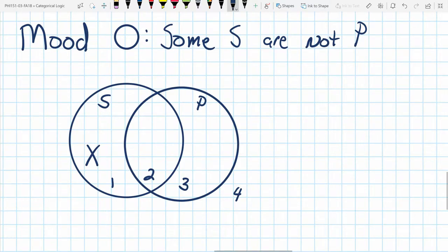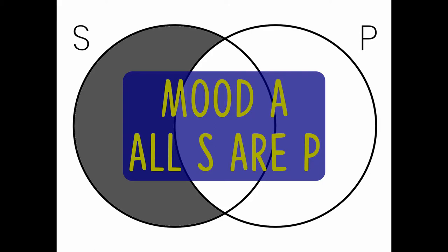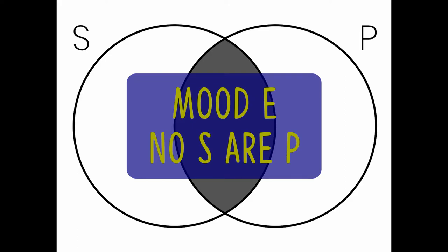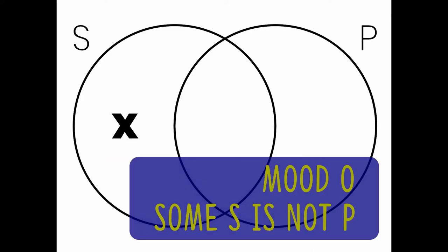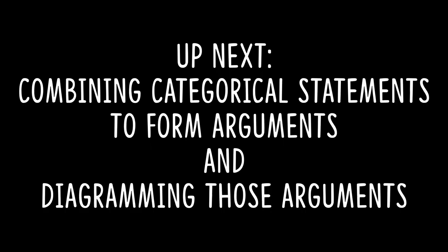Now, we don't know if there are also things that are in both sets S, P, or whether or not there are things that exist in set P. So we leave all that stuff blank. So this is basically how for mood A, we shade in the region of S that is outside of P. With mood E, we shade in the region between the two categories to say that they are mutually exclusive. In mood I, we say there's an X in region two. So there's at least one thing that's in both classes. And then in mood O, we put an X in region one to show that there's at least something that is in category S that is not in category P. In our next video, we will look at how we can combine these basic types of statements into arguments. Talk to you then.